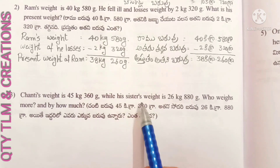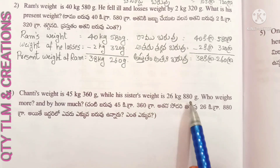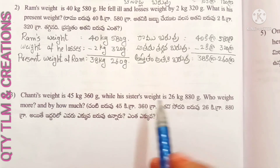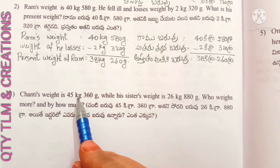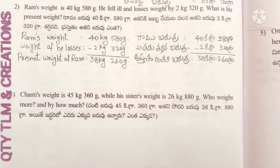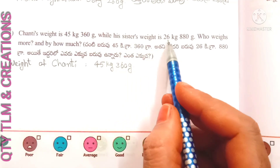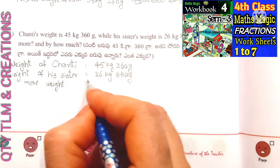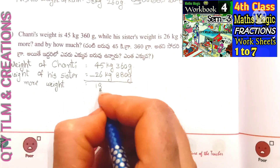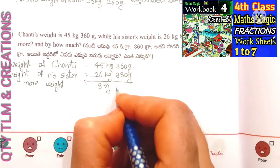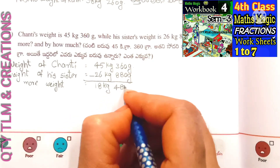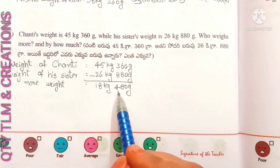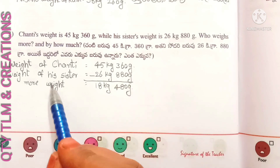Next question: Chanti's weight is 45 kilograms 360 grams, while his sister's weight is 26 kilograms 880 grams. Who weighs more and by how much? Weight of Chanti is 45 kilograms 360 grams, weight of his sister equals 26 kilograms 880 grams. The difference equals 18 kilograms 480 grams. Chanti weighs more than his sister.